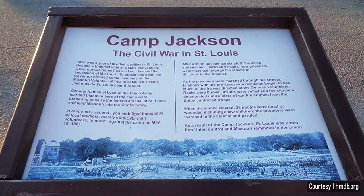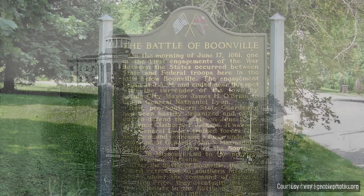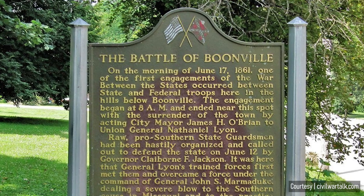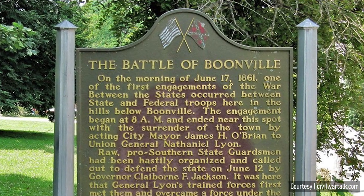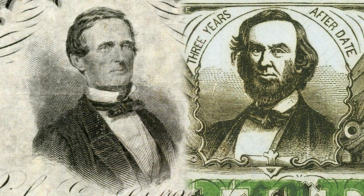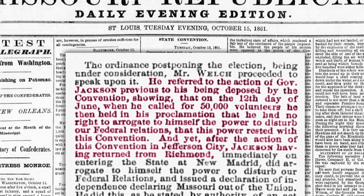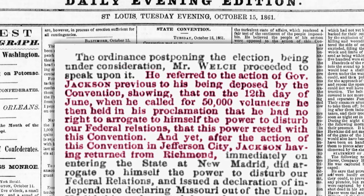On June 11, 1861, Jackson met with the commanding Union general hoping to extend a truce, but was refused. Union forces then marched on Jefferson City, resulting in Jackson and other pro-Confederate officials fleeing to Boonville, Missouri. Union forces then routed Governor Jackson and the rest of the Confederate Missouri State Guard at the Battle of Boonville, forcing them into the southwestern corner of the state to regroup. In mid-July, Jackson traveled to Richmond, Virginia to consult with Jefferson Davis, president of the Confederate States of America. On his return, he learned that the Missouri State Legislature had deposed him as governor, declaring the office vacant, and voted to remain in the Union.